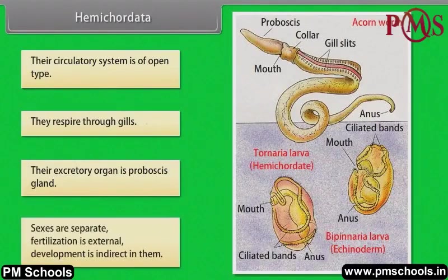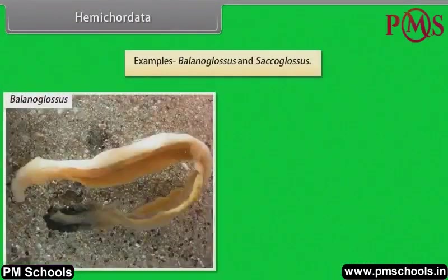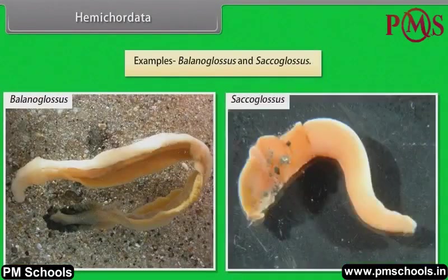Sexes are separate. Fertilization is external. Development is indirect in them. Examples: Balanoglossus and Saccoglossus.